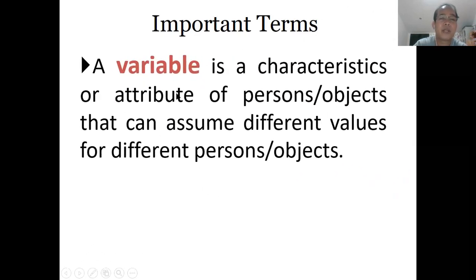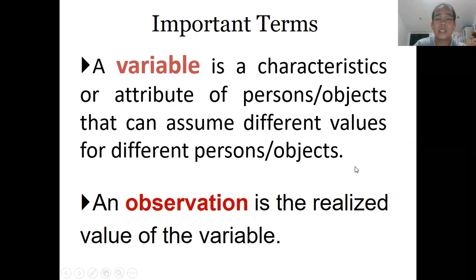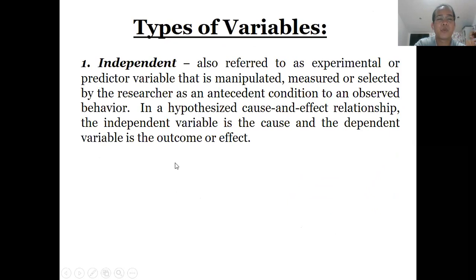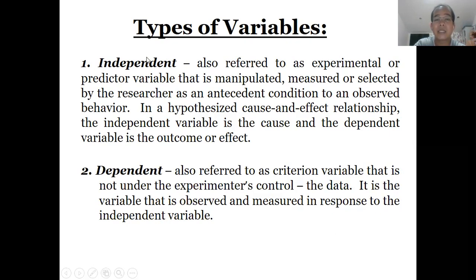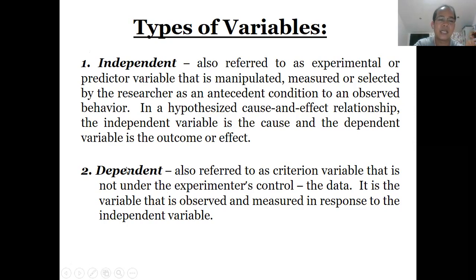Another important term is variable — the characteristics or attributes of persons or objects that can assume different values for different persons or objects. Once the variable is already determined, that realized value is known as an observation. Types of variables: you have independent and dependent. The independent variable, also referred to as the experimental variable, is manipulated by the researcher. The result of manipulating this independent variable is what we call the dependent variable, also known as the criterion variable — it is observed and measured in response to the independent variable.